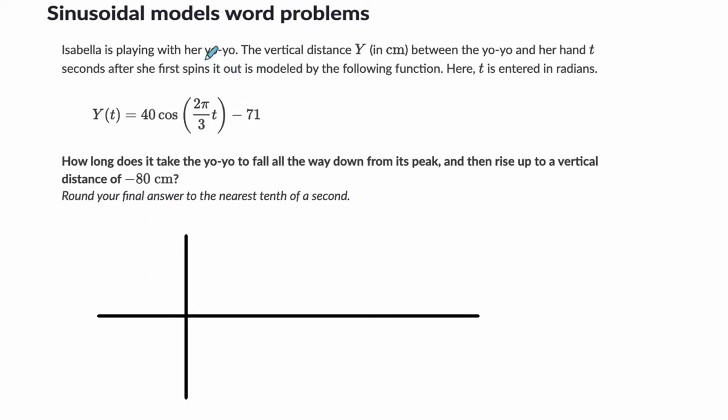Isabella is playing with her yo-yo. The vertical distance y in centimeters between the yo-yo and her hand t seconds after she first spins it out is modeled by the function below. I'm going to just highlight a couple of things here. We've got a yo-yo, and it's going down from her hand. If this is her hand, it's going down and then back up. That distance is what we're actually looking at here. That distance is y, and it's based on t seconds.